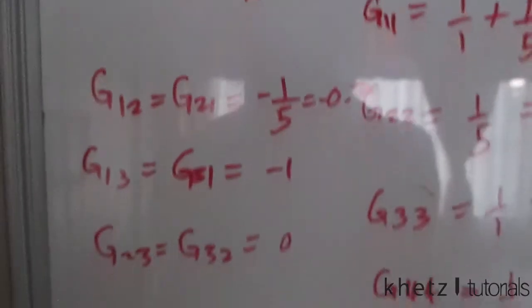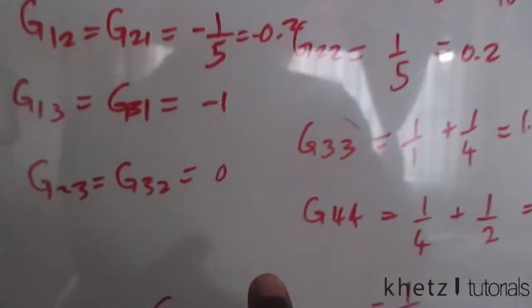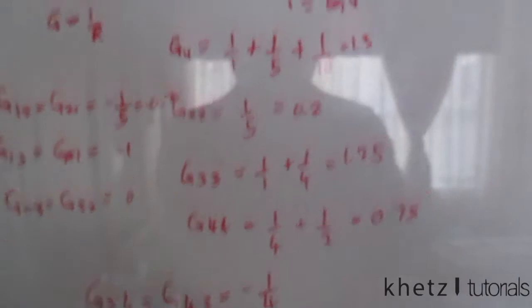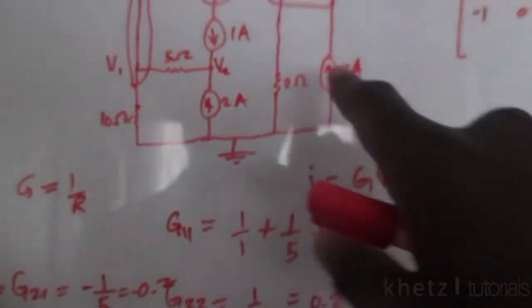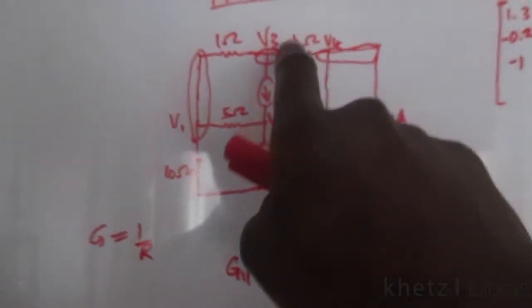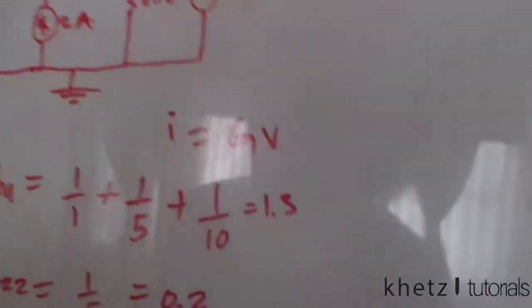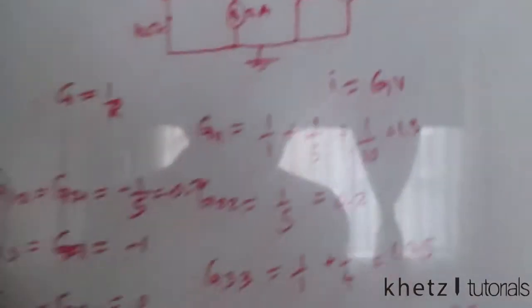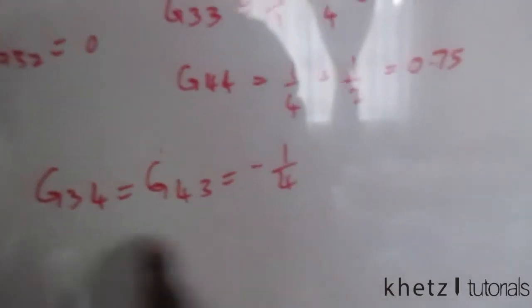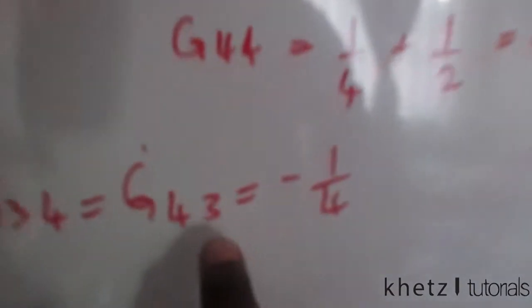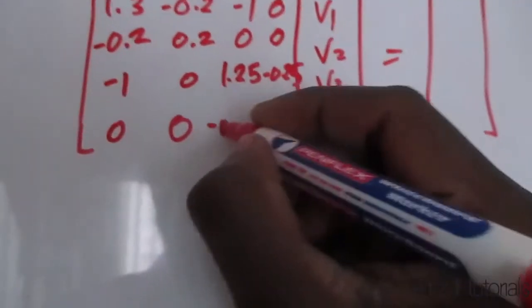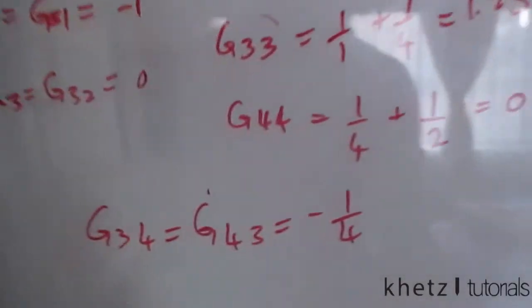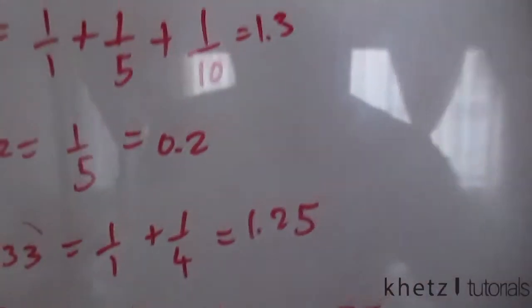For row 4: between node 4 and node 1 there's nothing, so G_41 = 0. Nodes 2 and 4 are not directly connected, so G_42 = 0. G_43 = −0.25, and G_44 = 0.75. Row 4 is [0, 0, −0.25, 0.75].